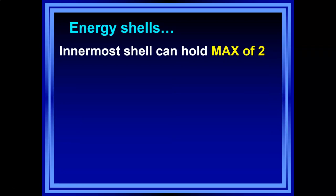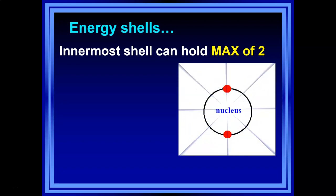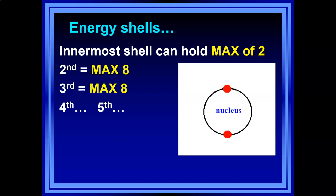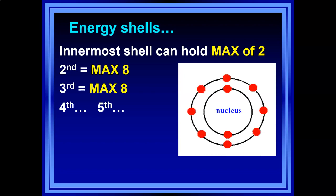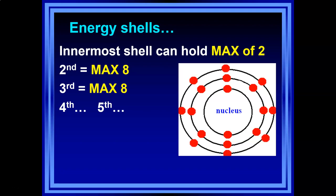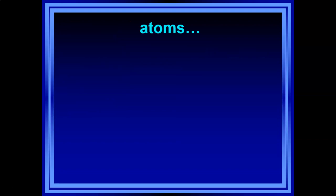The innermost shell — the closest to the protons, best seats in the house — can only hold two electrons. If you're the third electron on the scene, you've got to go to the next row. The next row can hold eight electrons, and it turns out all other rows — third, fourth, fifth — can also hold eight electrons. The only one that's different is the innermost, which holds only two. Electrons fill these shells from innermost to outermost.